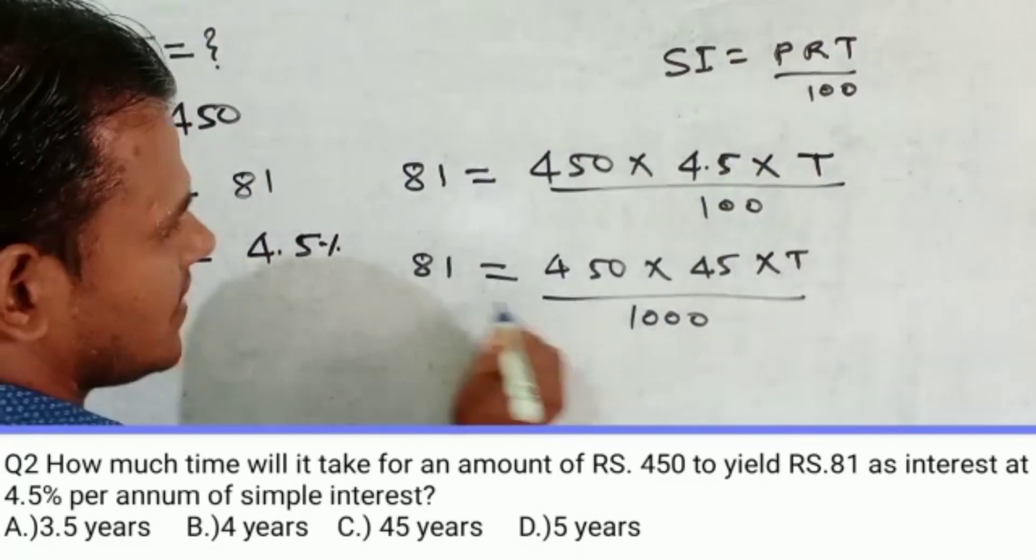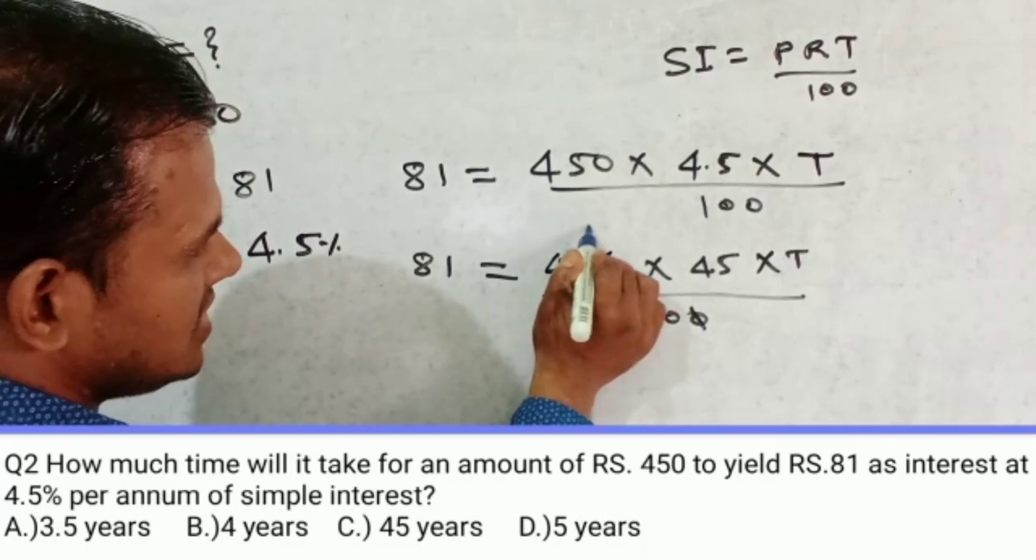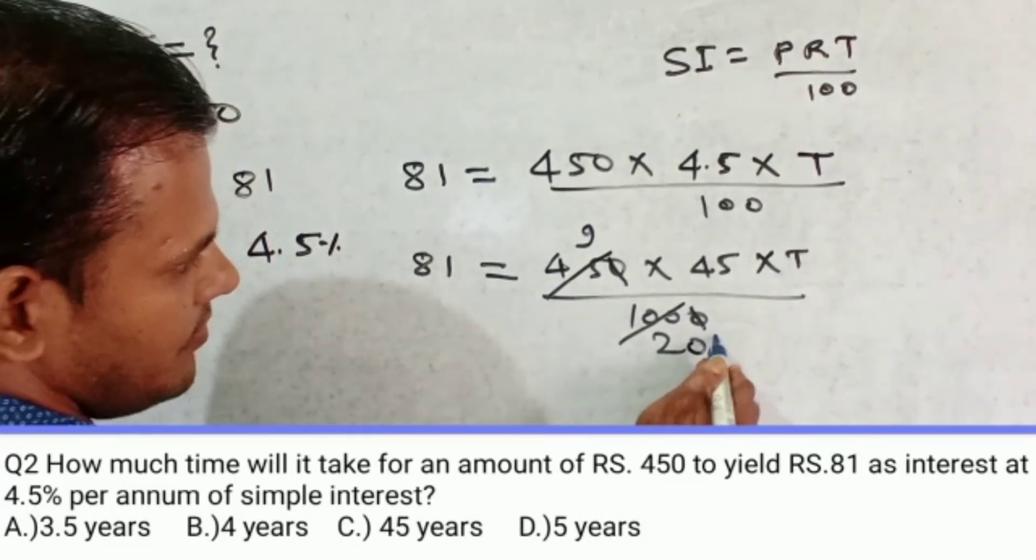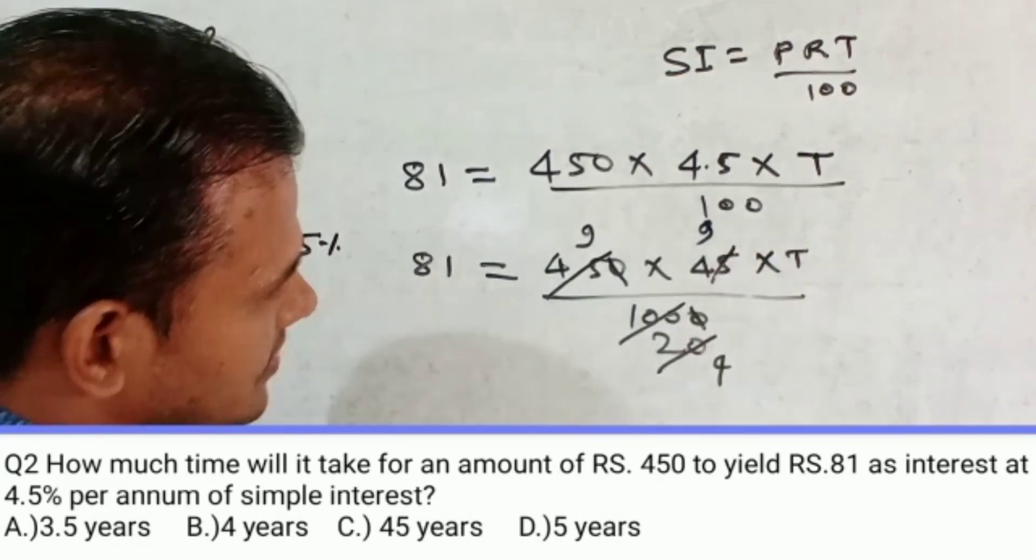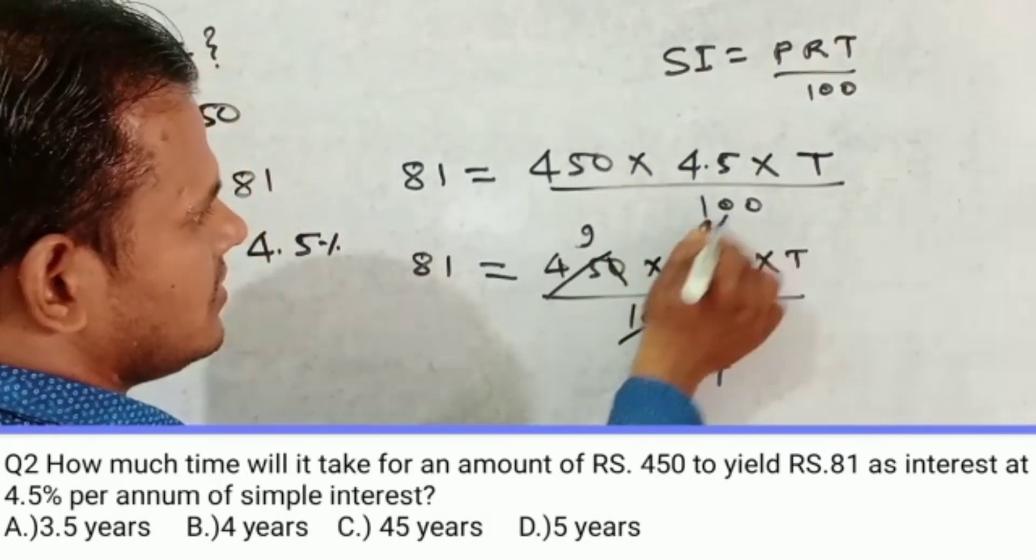Now 10 and 10 gets cancelled. 5, 9, 45. 5, 20, 200. 5, 4, 25, 9, 45. 9 into 9, 81. 9 into 9, 81 and 81 gets cancelled.